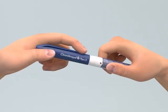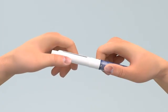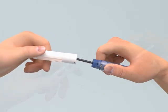Start by removing the pen cap by pulling it off your pen body. Holding the pen body, unscrew the cartridge holder and remove from the pen body.